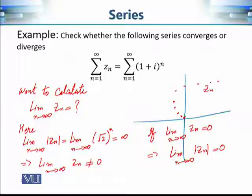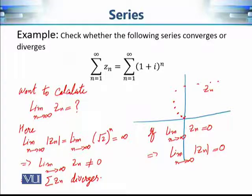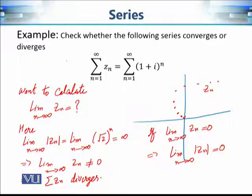Since the moduli are not approaching 0, zₙ is not approaching 0. If the terms of the sequence are not converging to 0, then the series must be divergent. That is how simple this criterion is, and using it we have confirmed that this series is divergent.